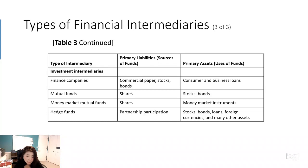The third type of investment intermediary is the money market mutual fund. It is very similar to a mutual fund, but the key difference is that if you invest in a money market mutual fund, you receive a checkbook and can write checks against the value of your share holdings.